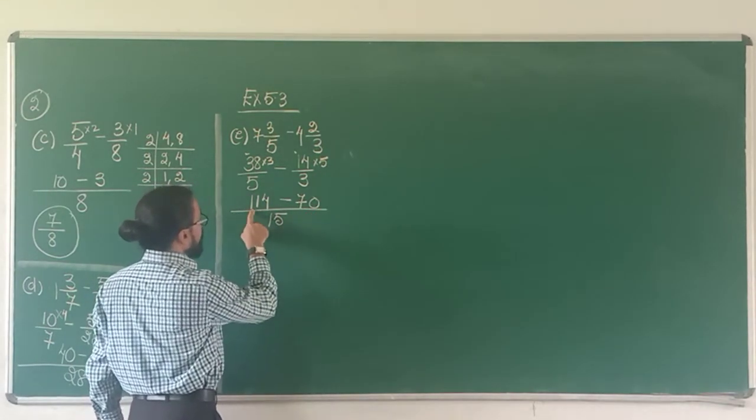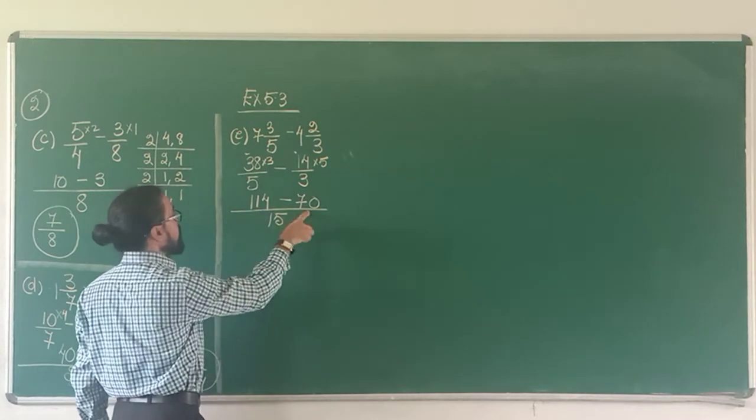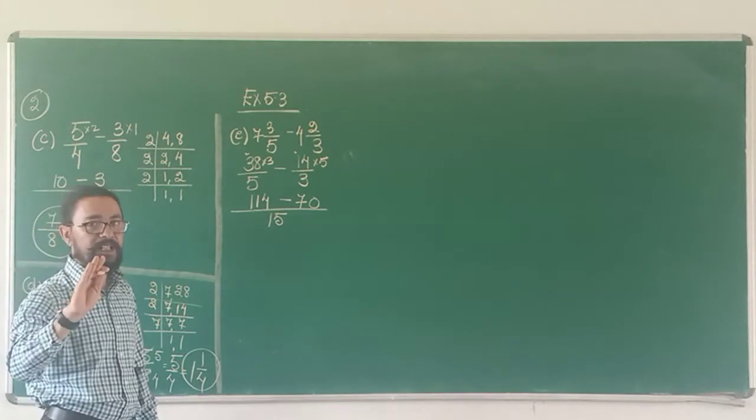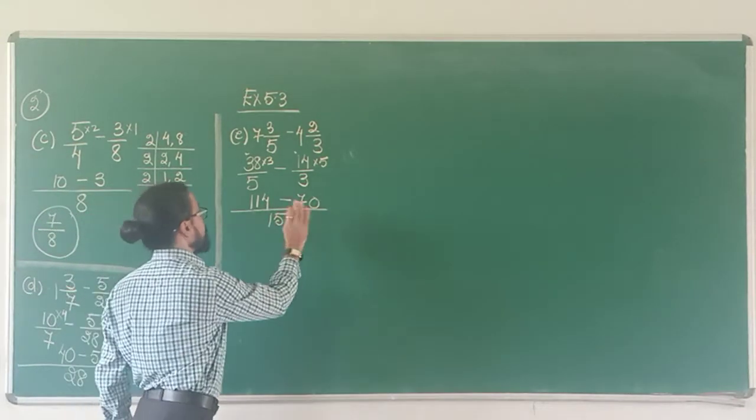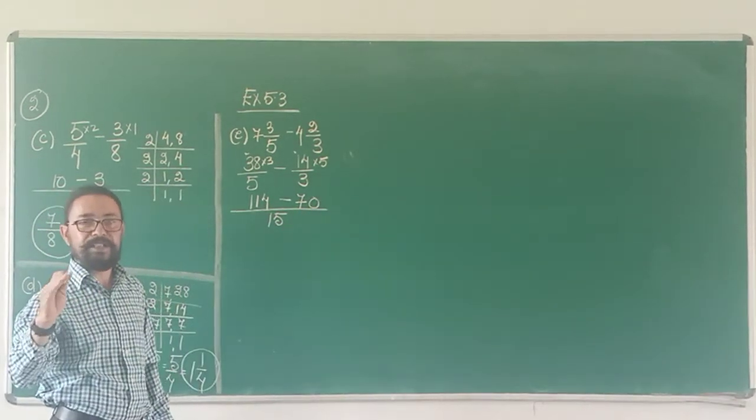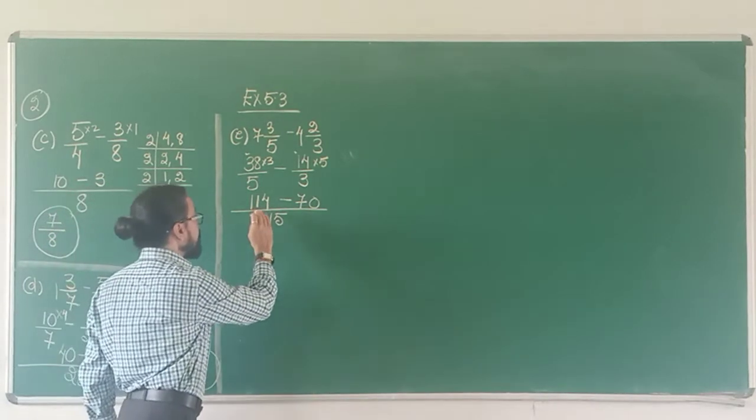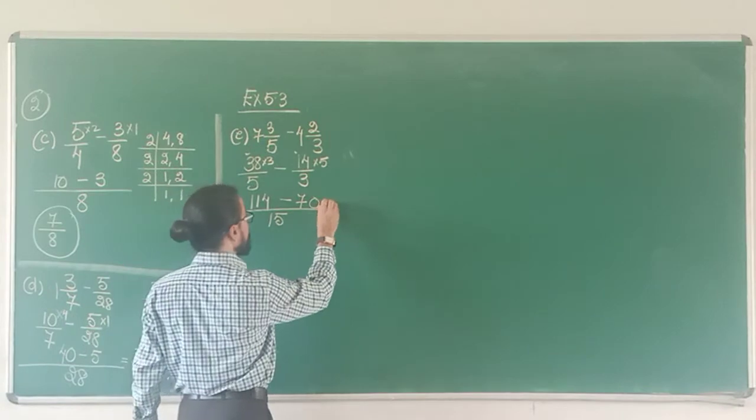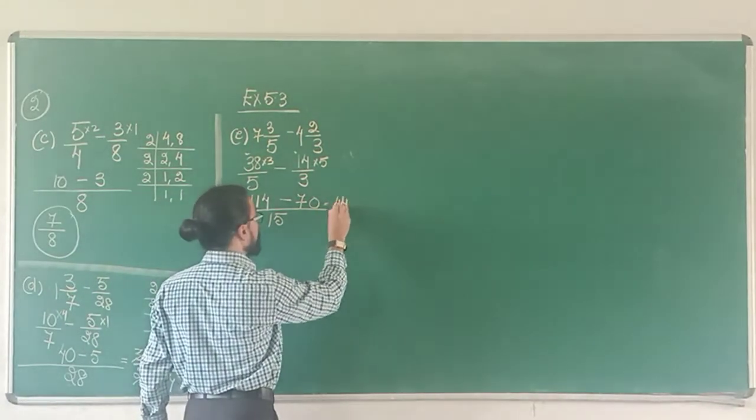So my answer is 44 upon 15. See, 114 minus 70. I am looking at 100. From 100 if I take away 70 it is easy. From 100 take away 70 you get 30. In that 30 add another 4 it will become 34. So my answer is 44 upon 15.